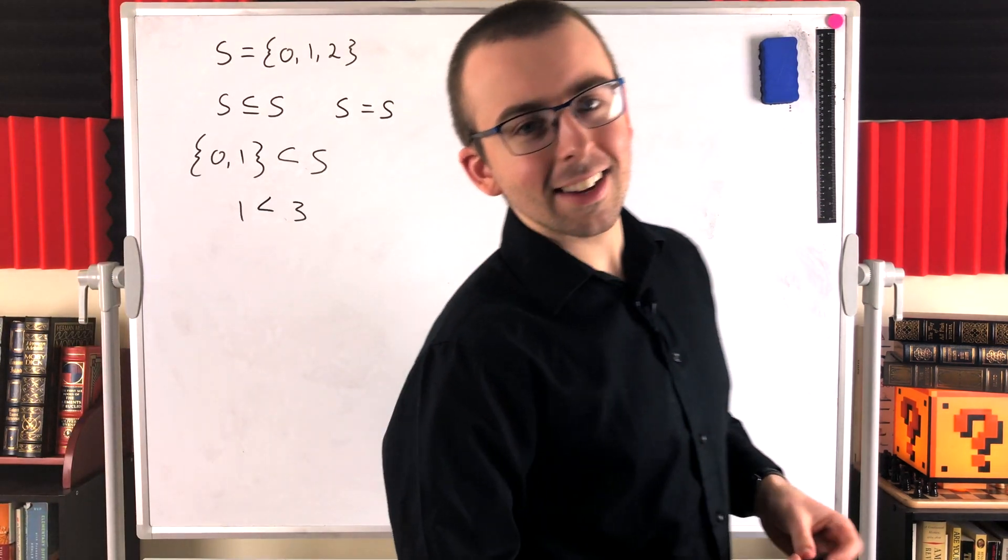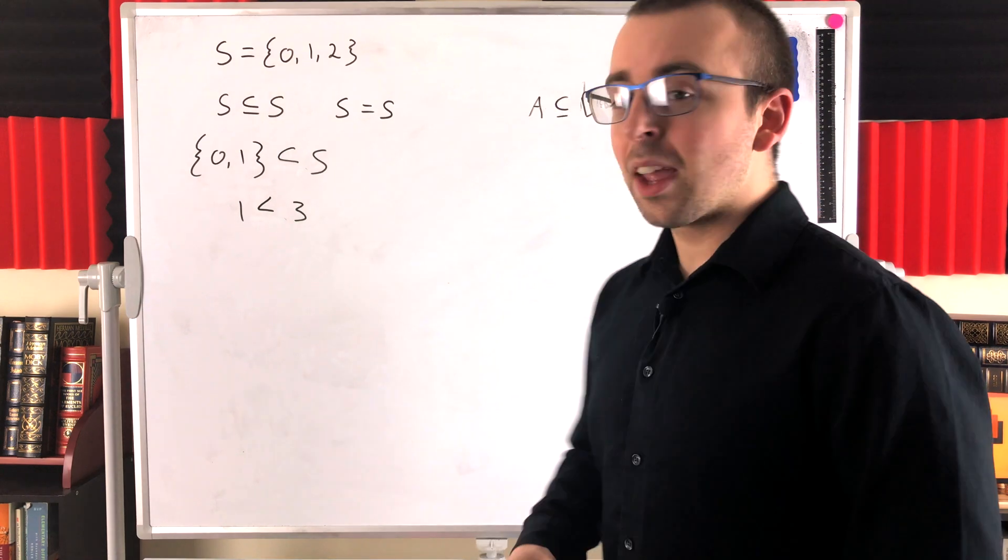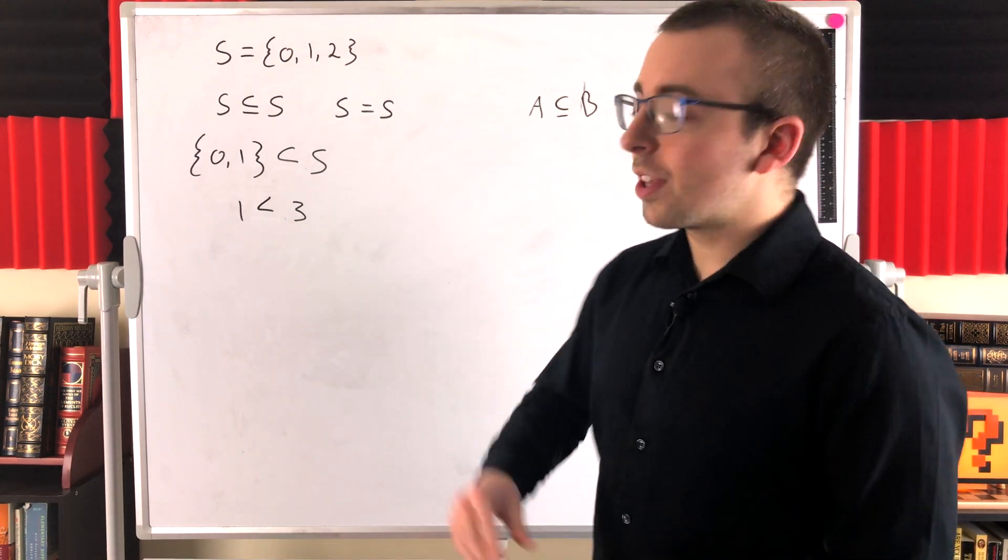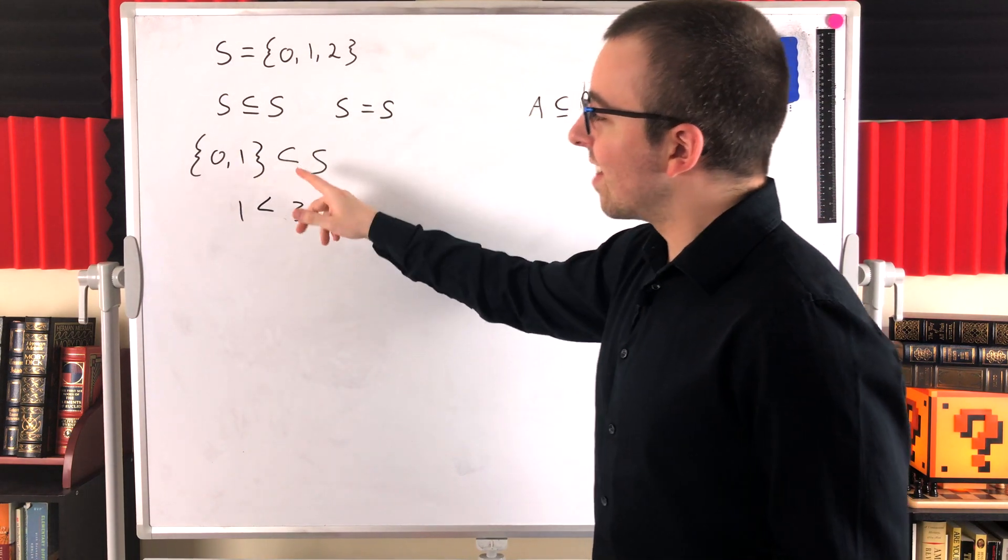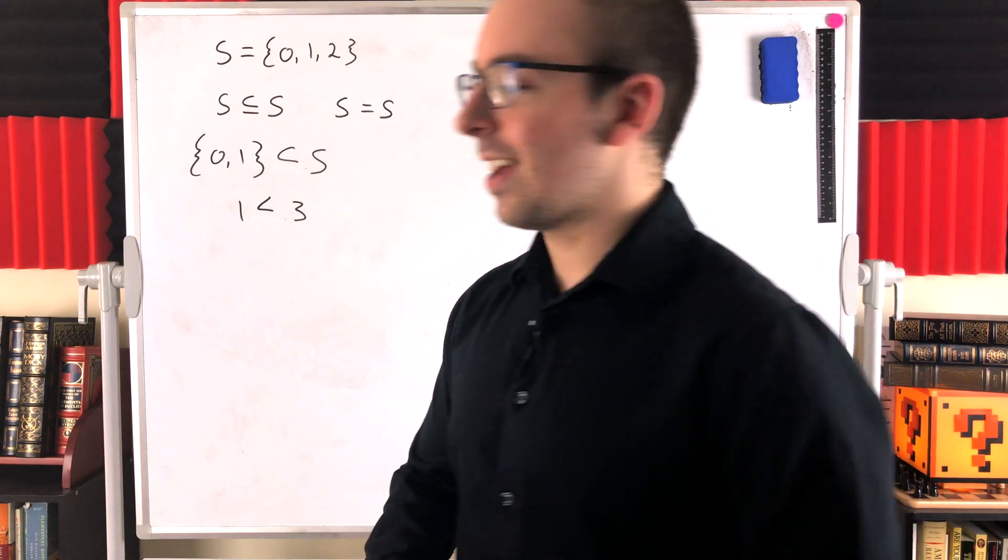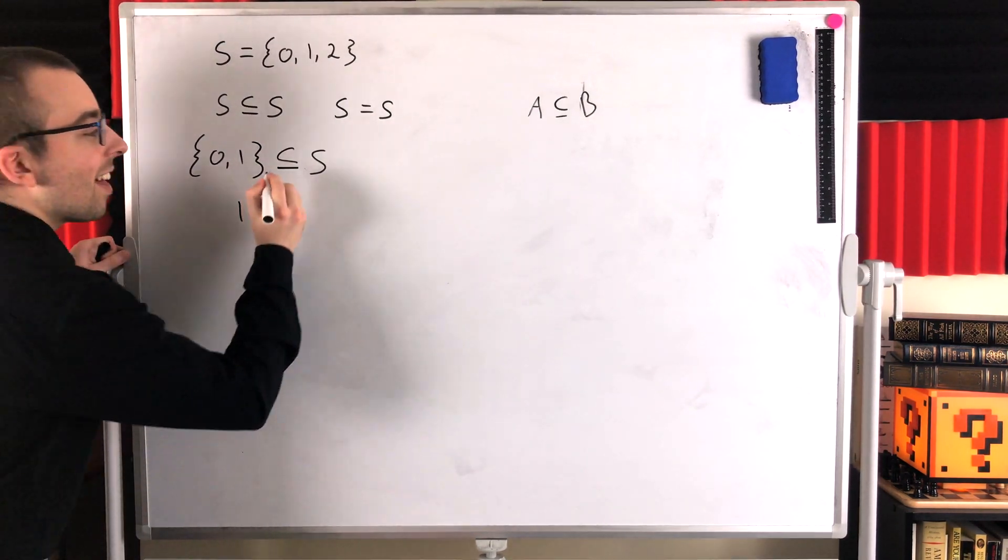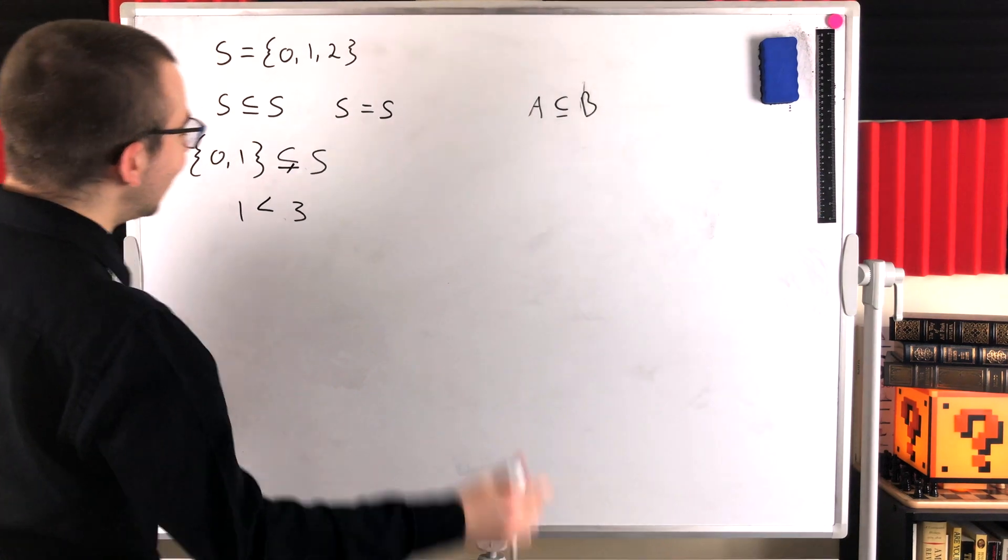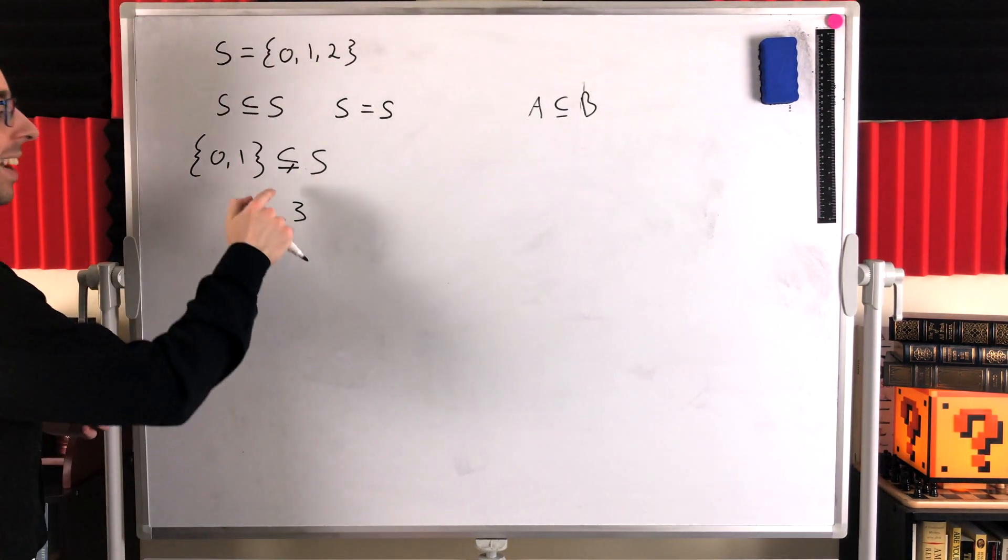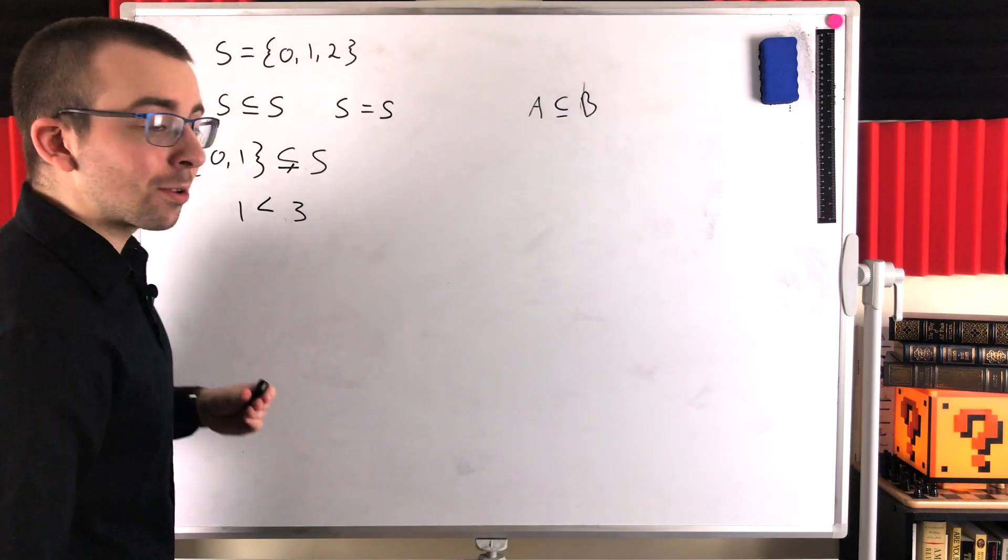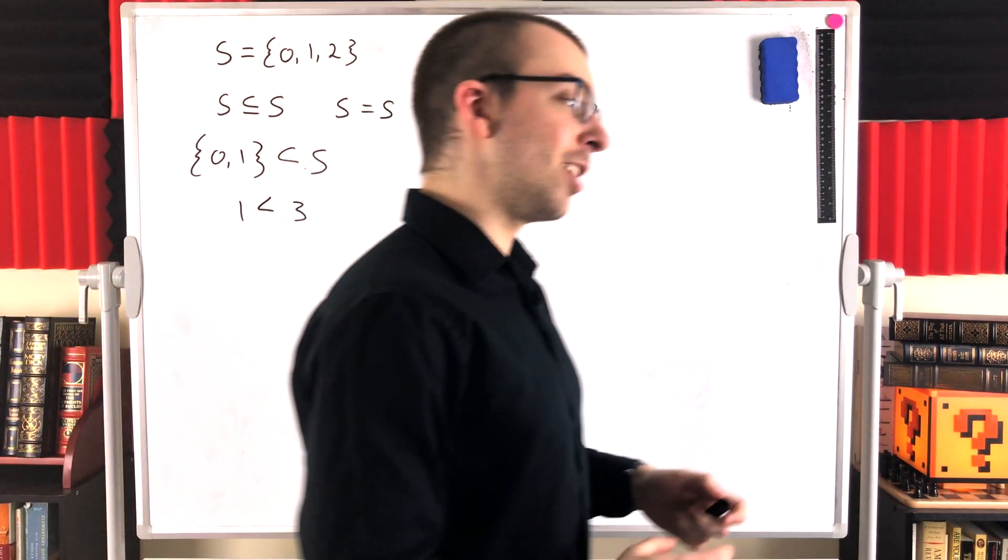However, as is often the case, I should point out that this notation is not universal. I just got a textbook in the mail that actually uses this symbol where I would usually use this one. And then to denote a proper subset, this textbook uses this symbol. They throw the line back in, but then they cross it off. So, that's the symbol this other text I've read uses to denote a proper subset, whereas they just use that symbol to denote the general subset relation.